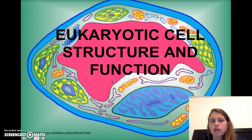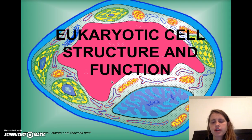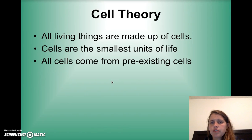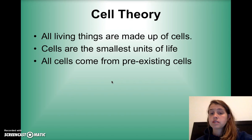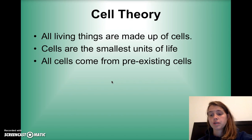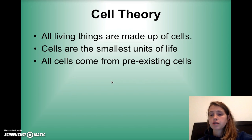I'm going to talk about eukaryotic cell structure and function. Let's quickly review. The cell theory states that all living things are made of cells, that cells are the smallest units of life — the smallest thing that can do all seven characteristics of life that we discussed — and they also come from other cells.